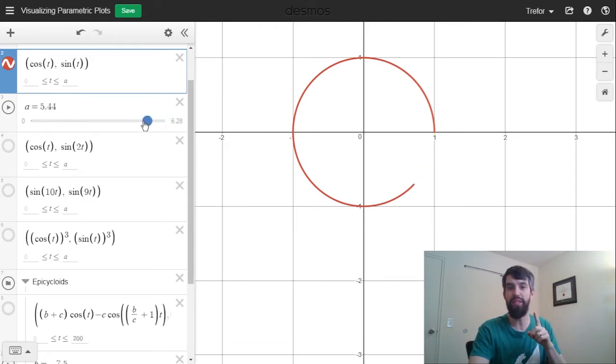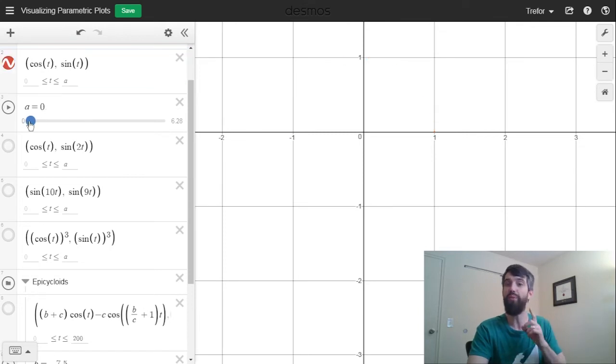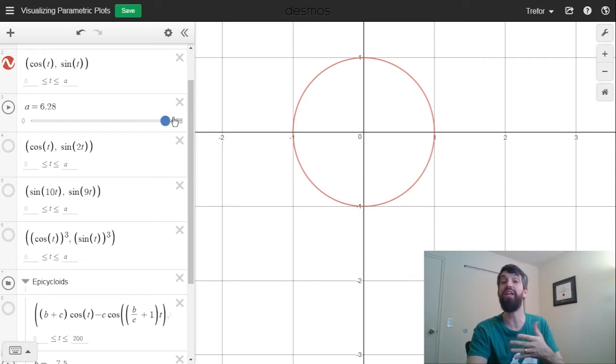What happens if I drag this slider back a little bit? You can see that less and less of this curve is going to be drawn. And I really like this dynamic way of thinking about a parametric plot. I start at 0, and then I increase the value of how many points I include, and it sort of traces out some particular curve.